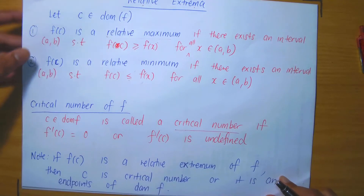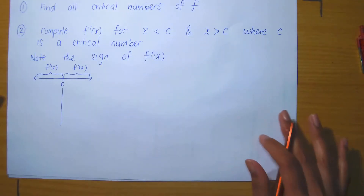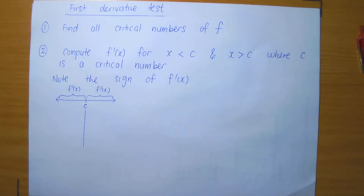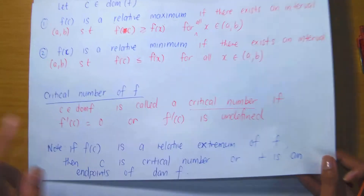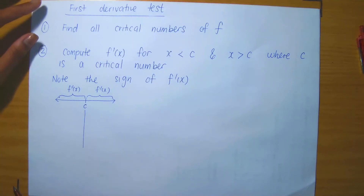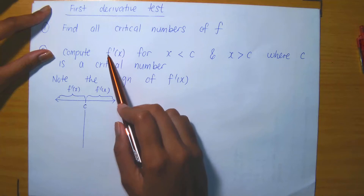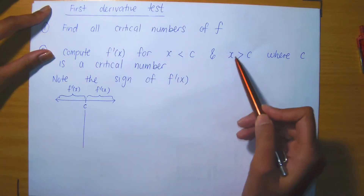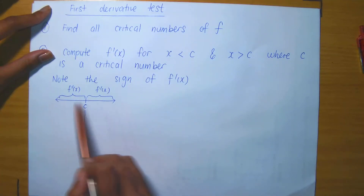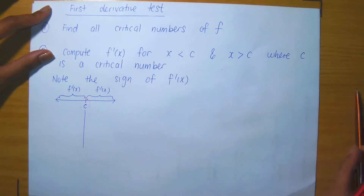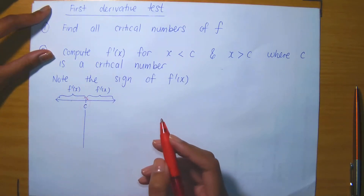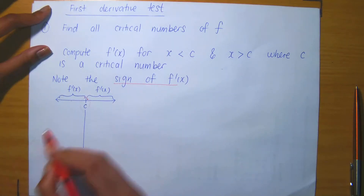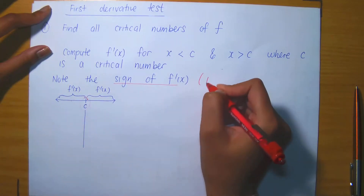The question now is how do we find these relative extrema? For that, we have a procedure called the first derivative test. Step one is to find all critical numbers of your function — this means finding the derivative and finding which values satisfy f prime of c equals zero or f prime of c is undefined. Step two, once we've found the critical numbers, is to compute the derivative and evaluate it for x values less than the critical number and greater than the critical number, then check the sign of the answer.